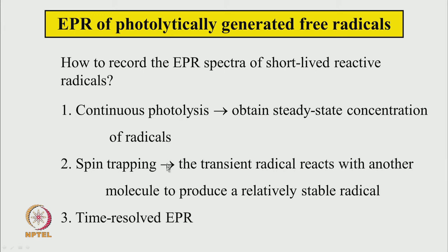Another possibility is called spin trapping. In this technique, the transient radical — one which does not live for a long time — reacts with some other molecule to produce a relatively stable radical. This stable radical can then be seen in the steady-state EPR spectrometer. The third technique is called time-resolved EPR spectroscopy, where we try to capture the radical as soon as it is created.